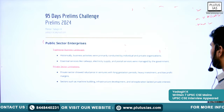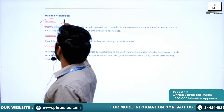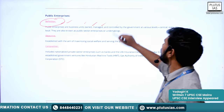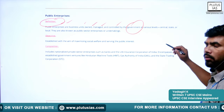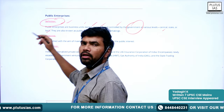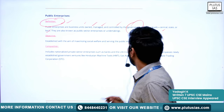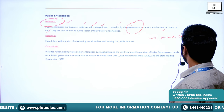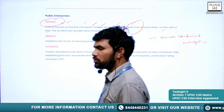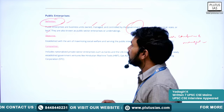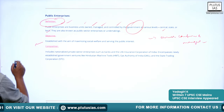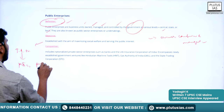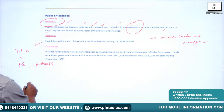Now we will see the definition of a public enterprise. It is a business or company owned, managed, and controlled by the government at various levels — central, state, or even local. The first Prime Minister of India, Jawaharlal Nehru, termed public sector enterprises and big projects like hydroelectric power projects as the 'modern temples of India'.